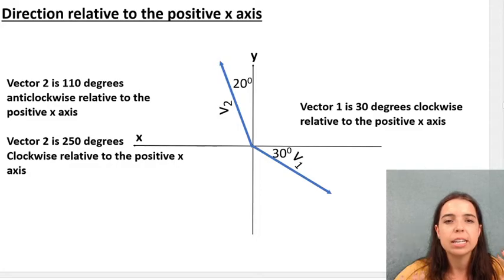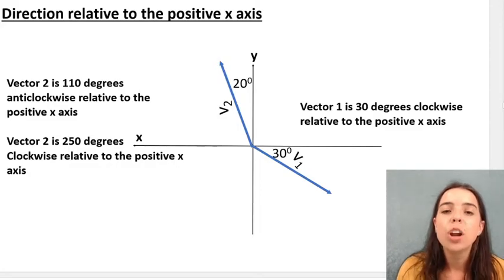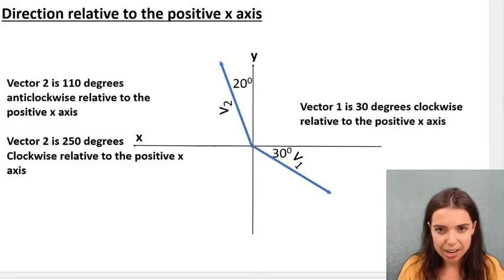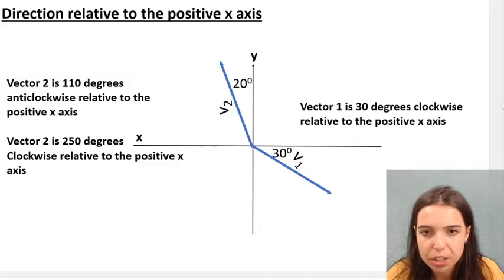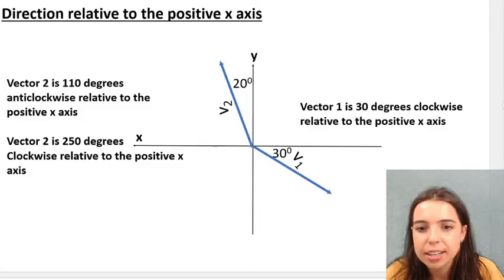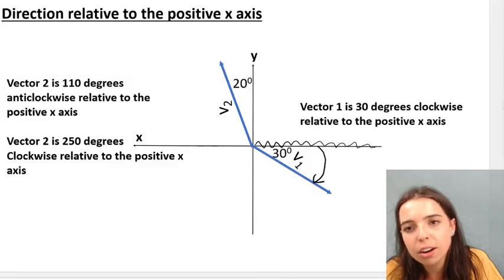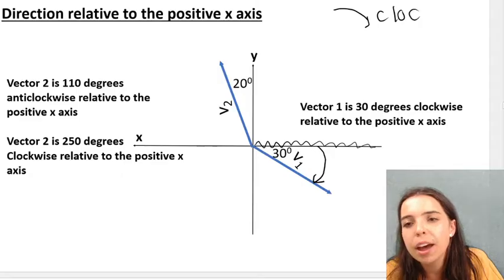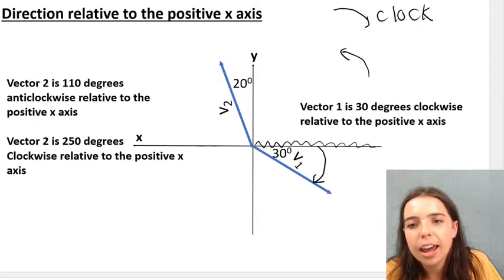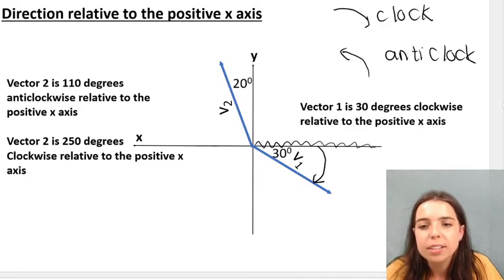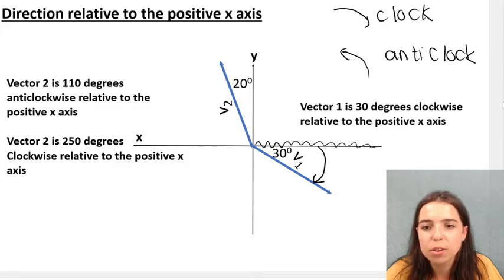The last way that I need you to remember is direction relative to the positive x-axis. So on the screen, I have a Cartesian plane. This is the y-axis and this is the x-axis. Vector 1, here's the x-axis, so I'm going to just squiggle it in there. Vector 1 is over here, this angle over here. This is 30 degrees clockwise. Remember, a clock goes like this. That's clockwise. This way is anticlockwise. So vector 1 is 30 degrees clockwise relative to the positive x-axis.